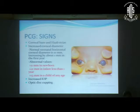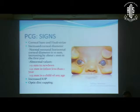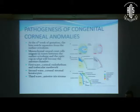Signs include corneal haze and Haab's striae. A very important feature is increased corneal diameter. Unlike adult glaucoma, pediatric glaucoma is characterized by enlargement of the eye — increased corneal diameter, increased axial length, or progressive myopia. The normal neonatal horizontal corneal diameter is 10 mm, increasing by about 1 mm in the first year. Remember: 11 mm in a newborn is abnormal; more than 12 mm in an infant under 1 year is abnormal; and more than 13 mm in a child of any age is abnormal. Increased IOP and optic disc cupping are also key signs.